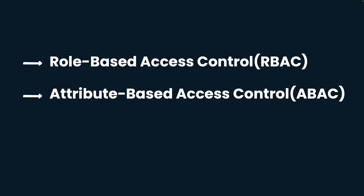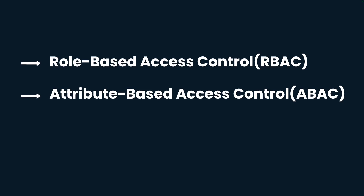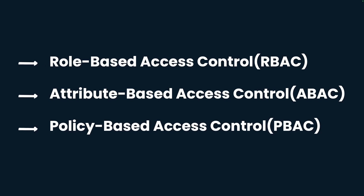There's also attribute-based access control, which is more powerful. Beyond roles and permissions, it also looks at attributes of the user. For example, if a user only works the night shift but tries to log in during the day, the system raises an alarm because that attribute — login time — doesn't match. Along with roles and permissions, such attributes also come into picture to provide access. There's also policy-based access control, where the organization defines policies and grants access to certain services based on those policies.